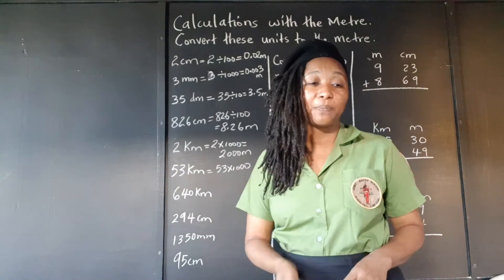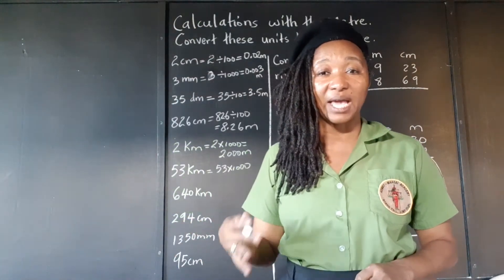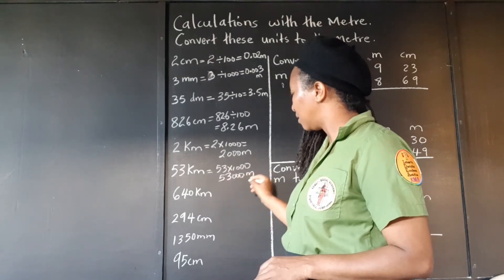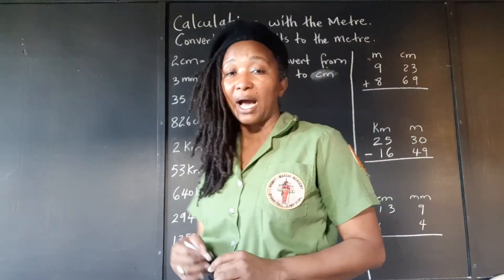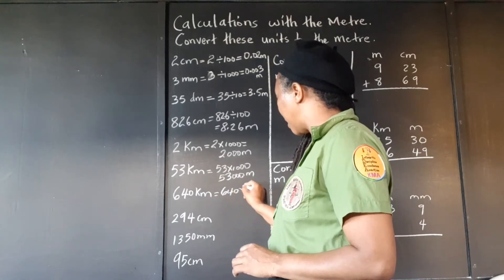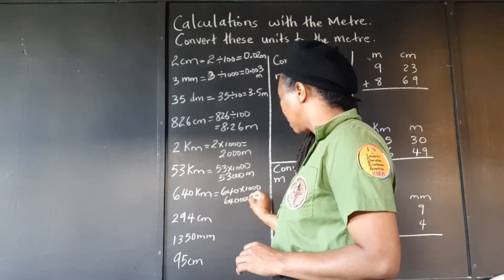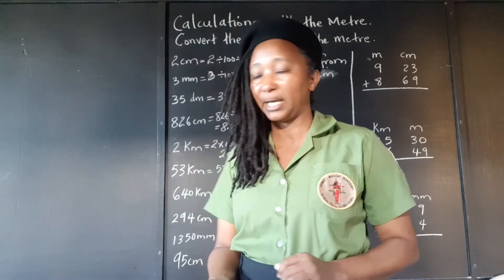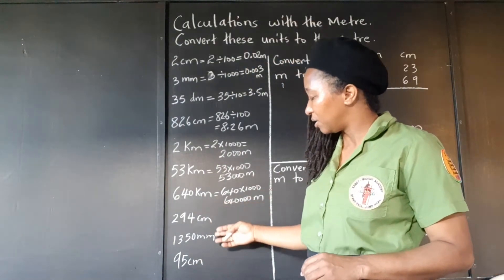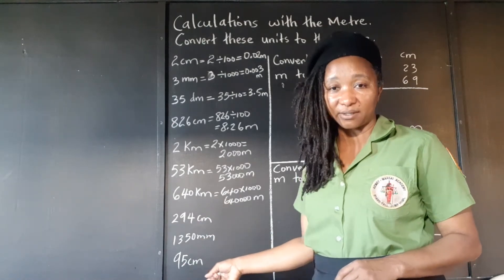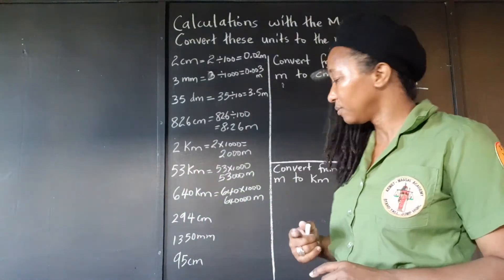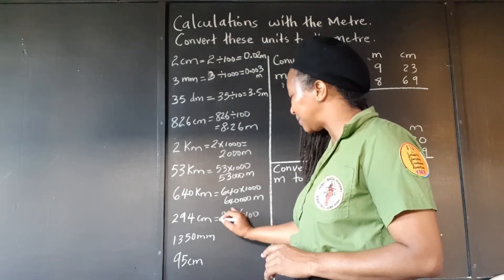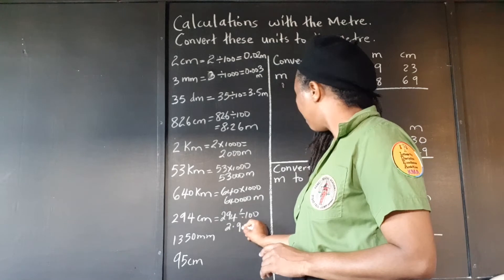When multiplying by powers of 10, we simply add that number of zeros to the end of the number. Multiplying by 1,000 means we add 3 zeros. 640 kilometers to meters — again multiply by 1,000 — gives 640,000 meters. Bigger unit to smaller unit, we multiply. Now we're changing centimeters back to meters: 100 centimeters make 1 meter, so we divide by 100, moving two places to the left, giving 2.94 meters.